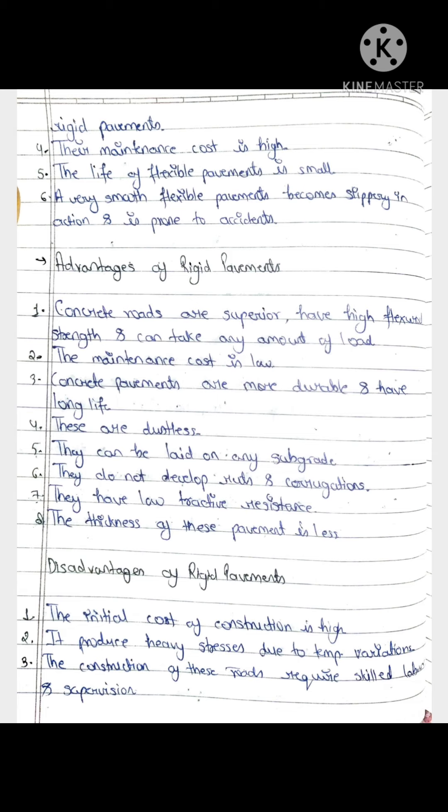They do not develop ruts and corrugation. What is ruts? They are holes and potholes. Because the strength is good, rutting does not happen. They have good tractive resistance. The thickness of pavement is less - you can see there are three layers.